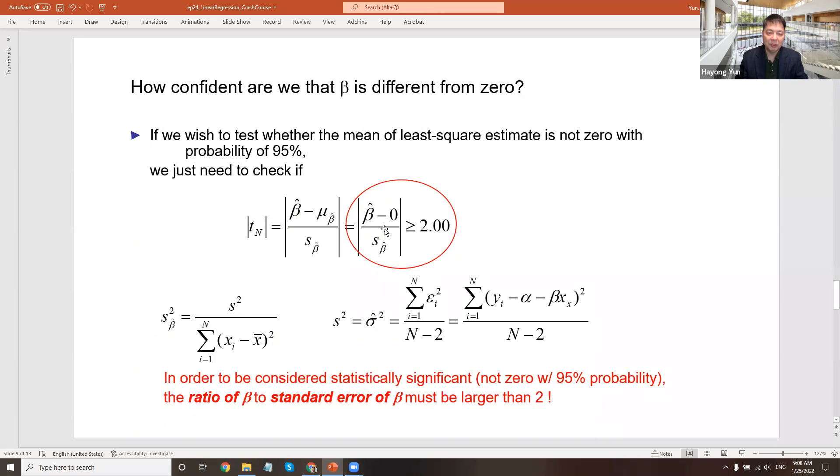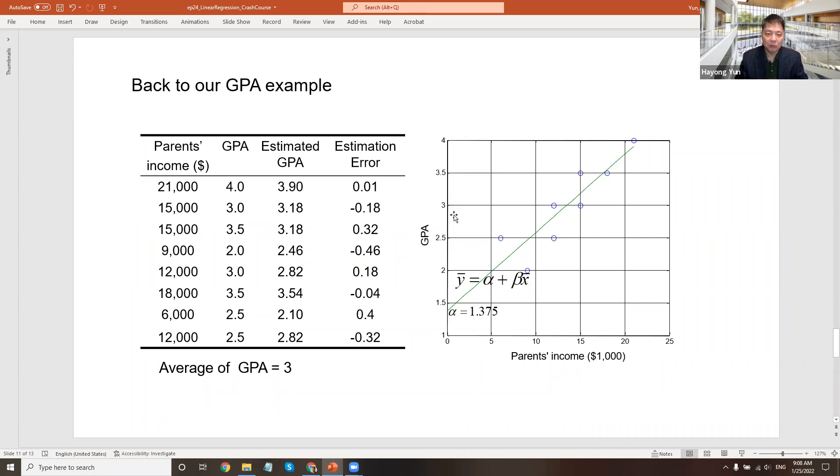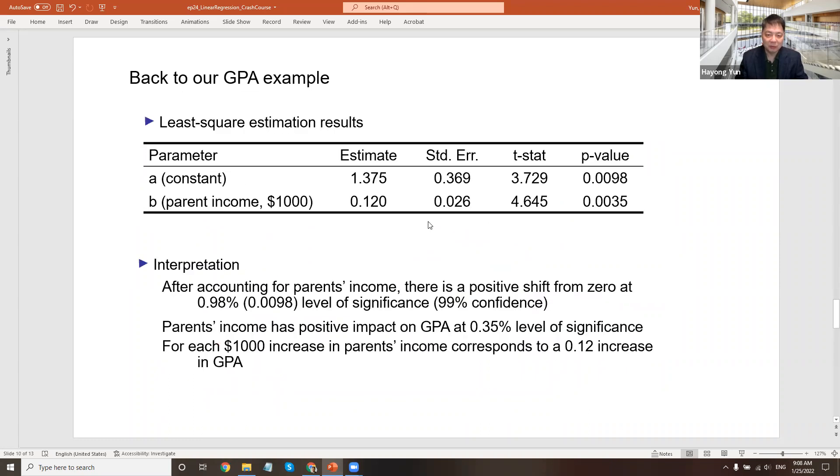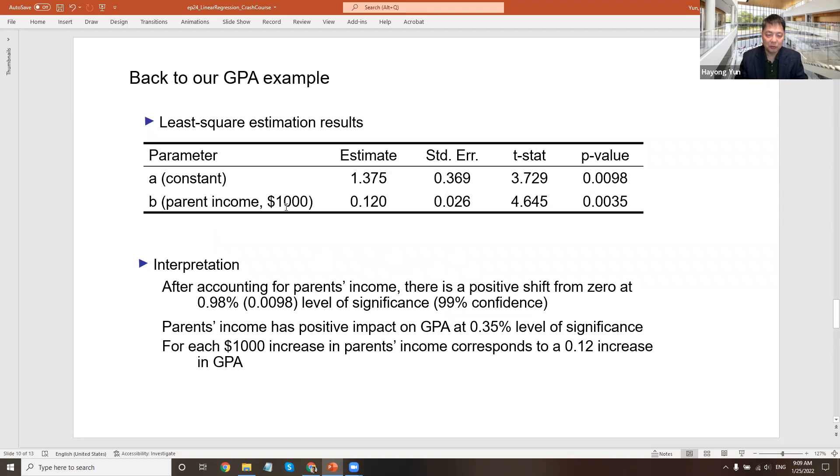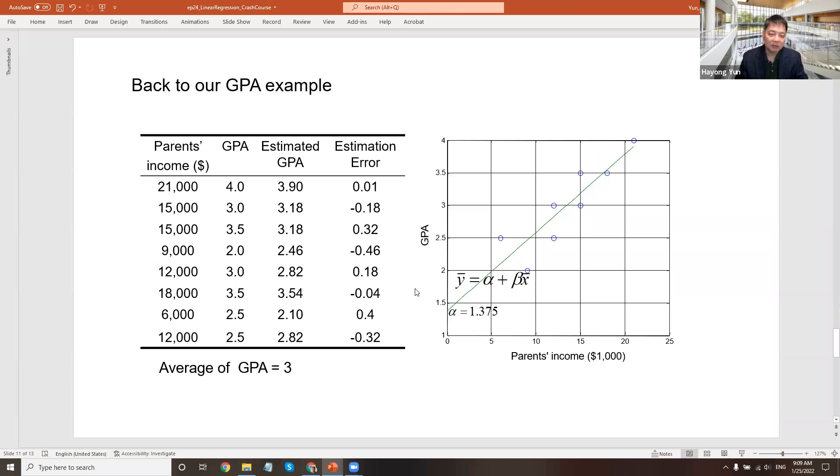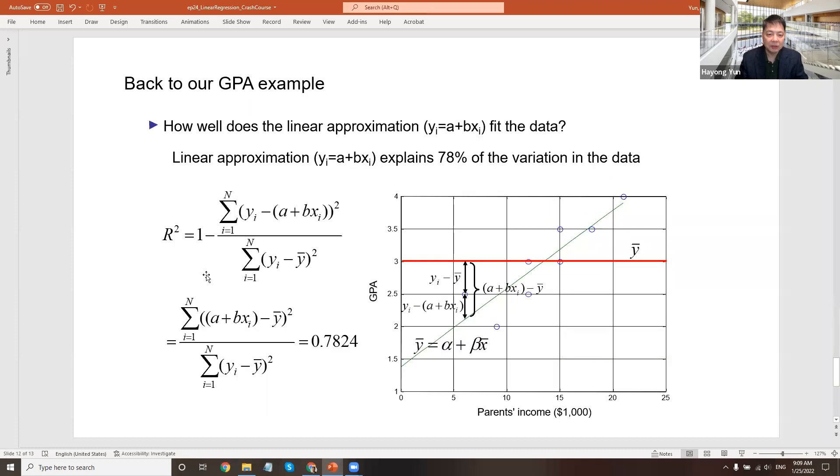Going back to our example of the GPA, I actually ran the actual linear regression with an intercept, a constant and a slope for GPA. You get a constant estimate here, 1.375, and the slope is 0.12 per thousand dollars. Per thousand dollar increase, the GPA increases by 0.12. So that's how it explains here, with the average of 3.